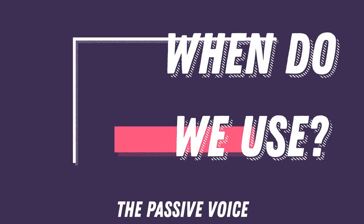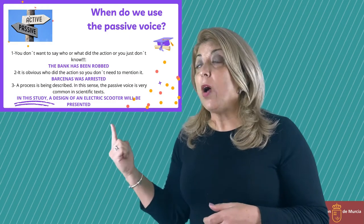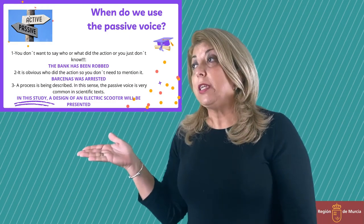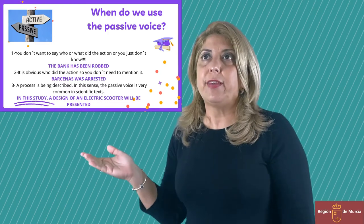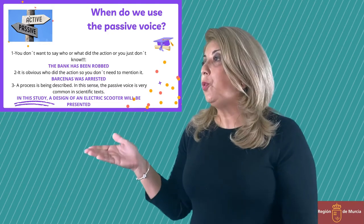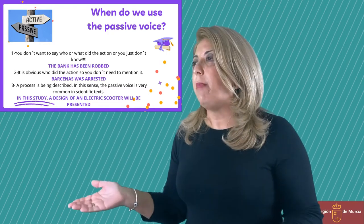When do we use it? That's the first point we are going to deal with. In fact, there are several reasons why, but the most important ones are: number one, you don't know who or what did the action. For example, the bank has been robbed. It's obvious who did the action. Barcenas was arrested, of course, by the police.